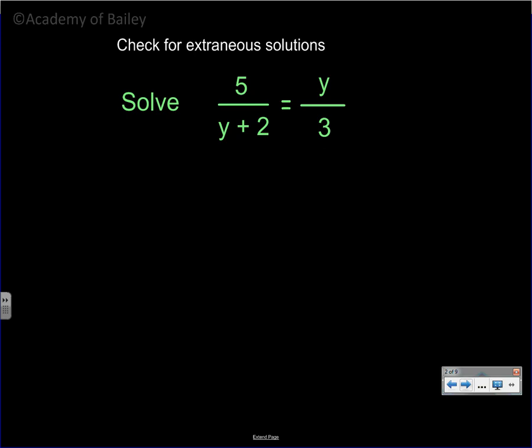Sometimes you're going to have problems that look like this — let's say one fraction is equal to another fraction. What's the value of y going to be here? Well, if we think about it, since we have an equal sign and we just have one fraction on the left and one fraction on the right, we can just cross multiply and solve it out. So let's go ahead and do that.